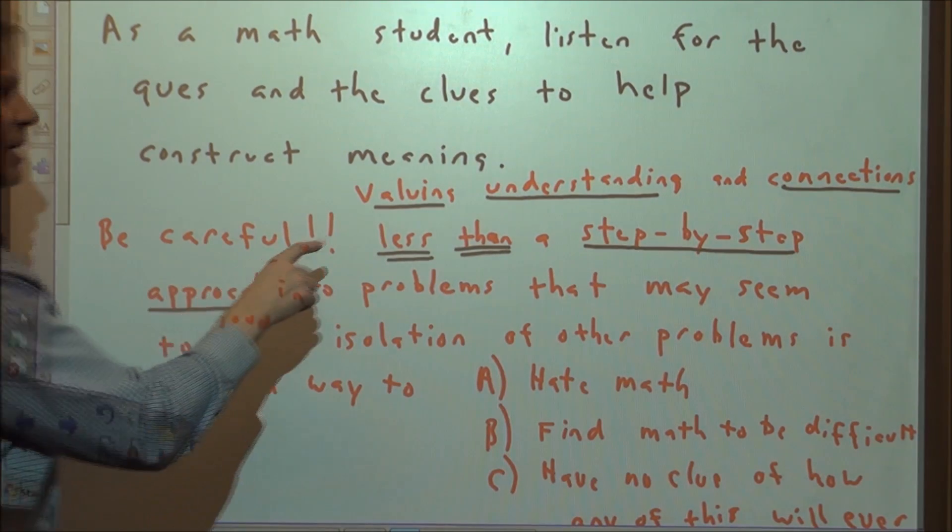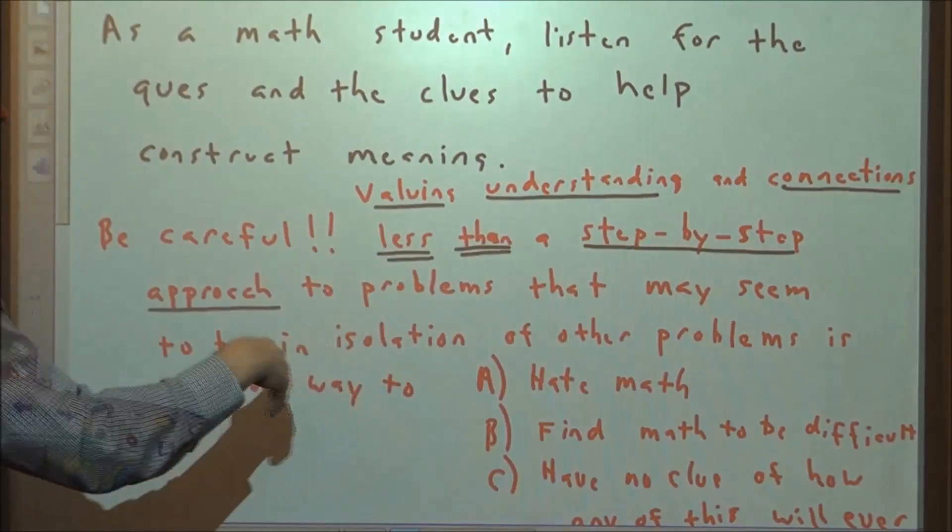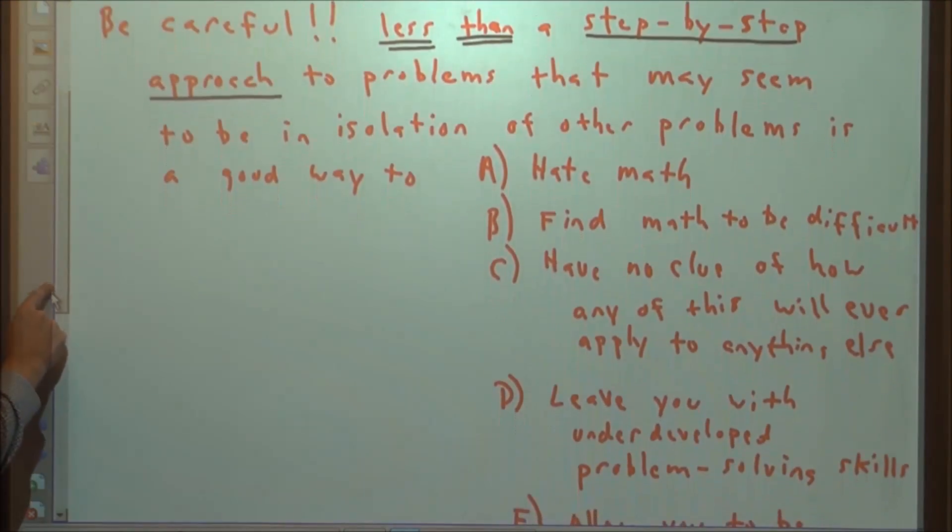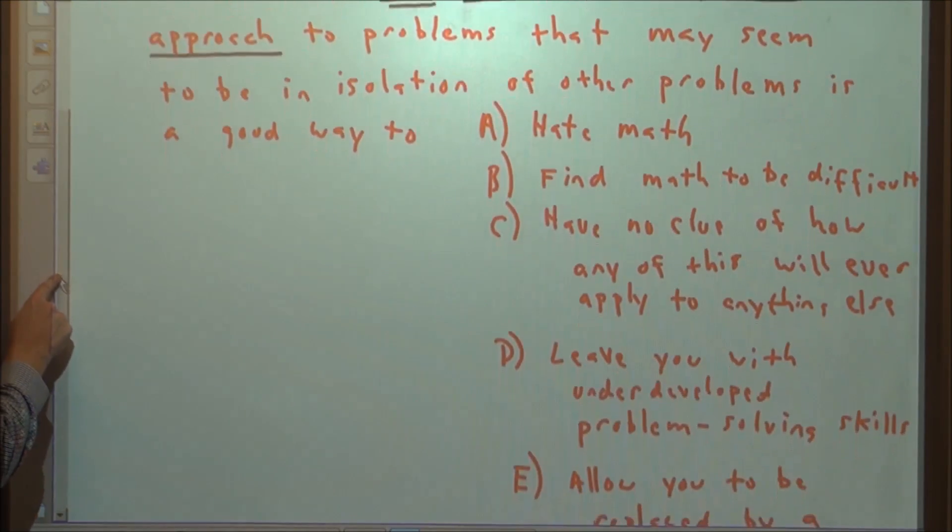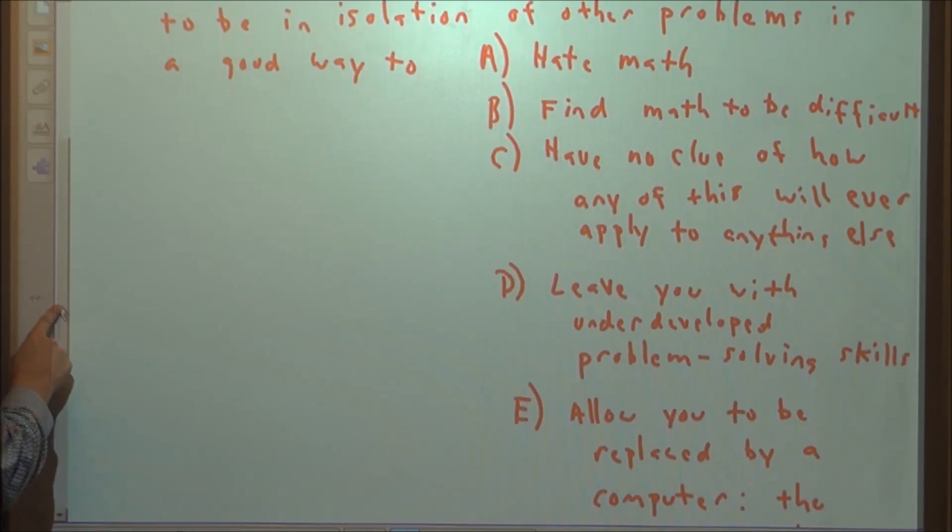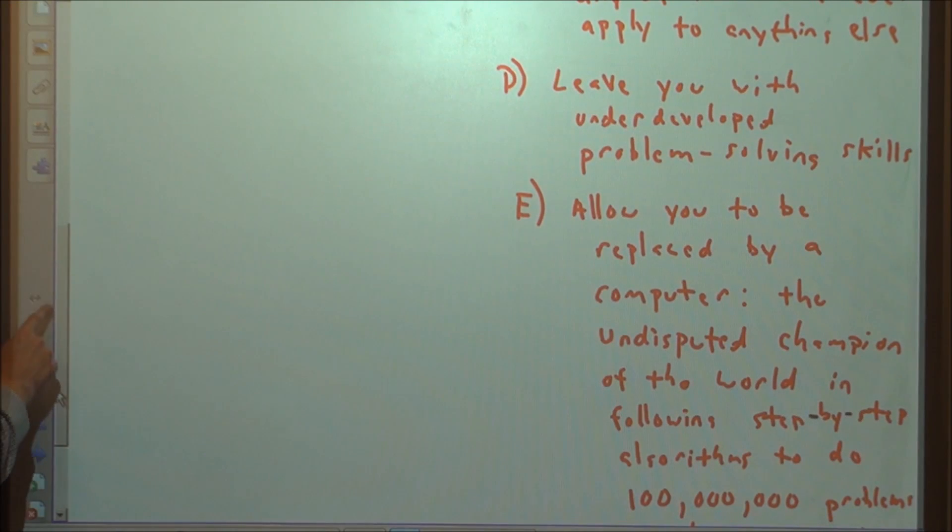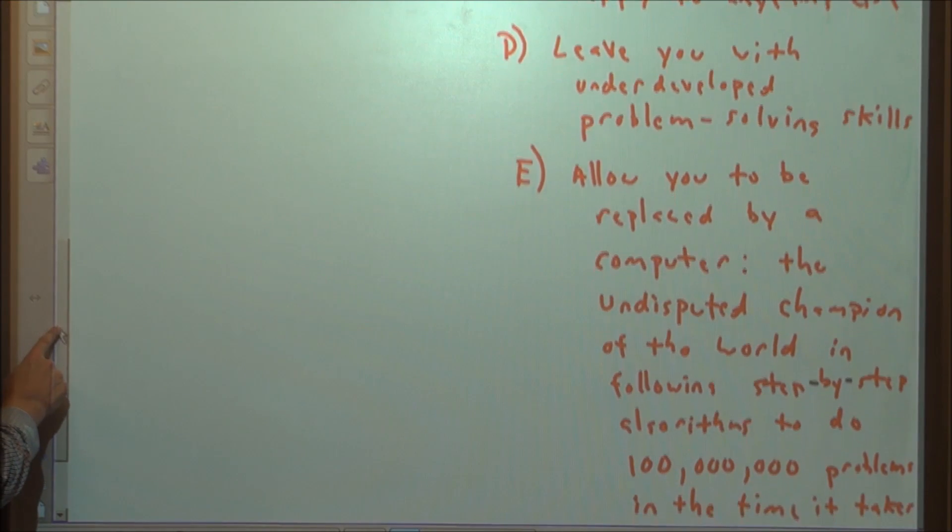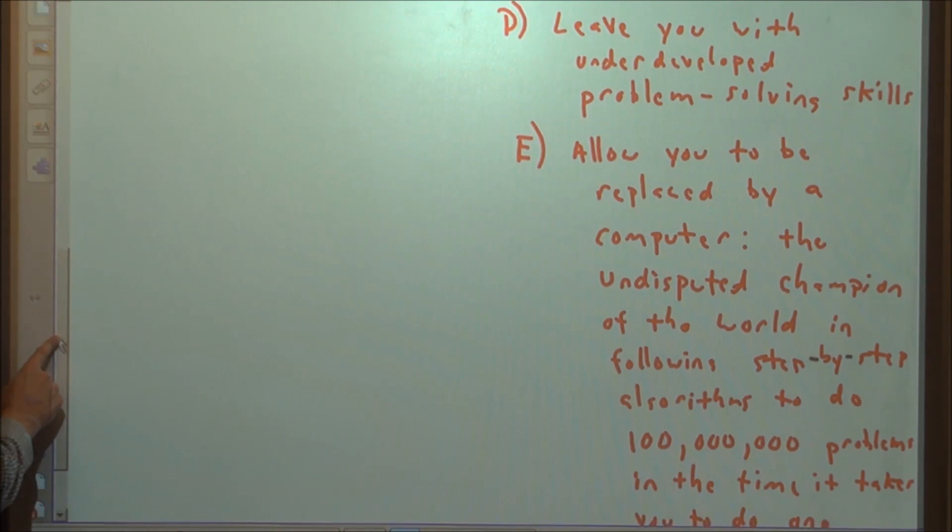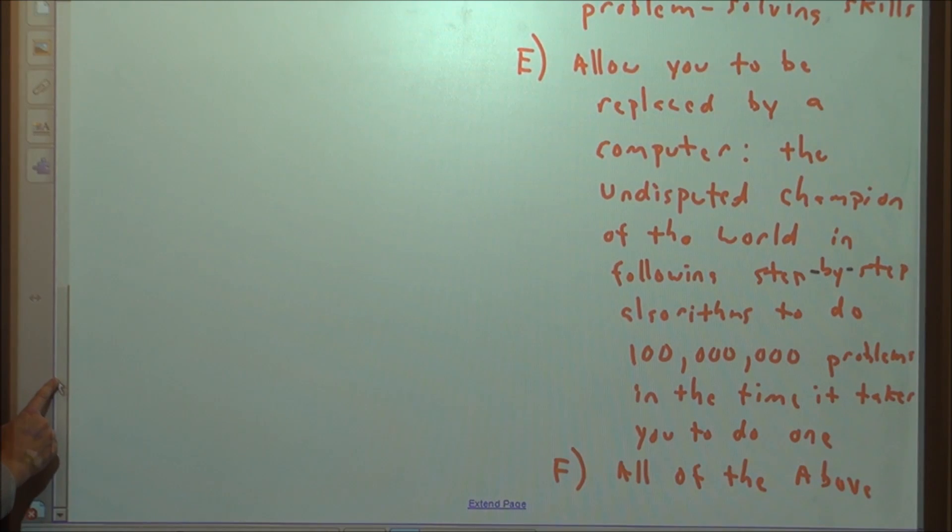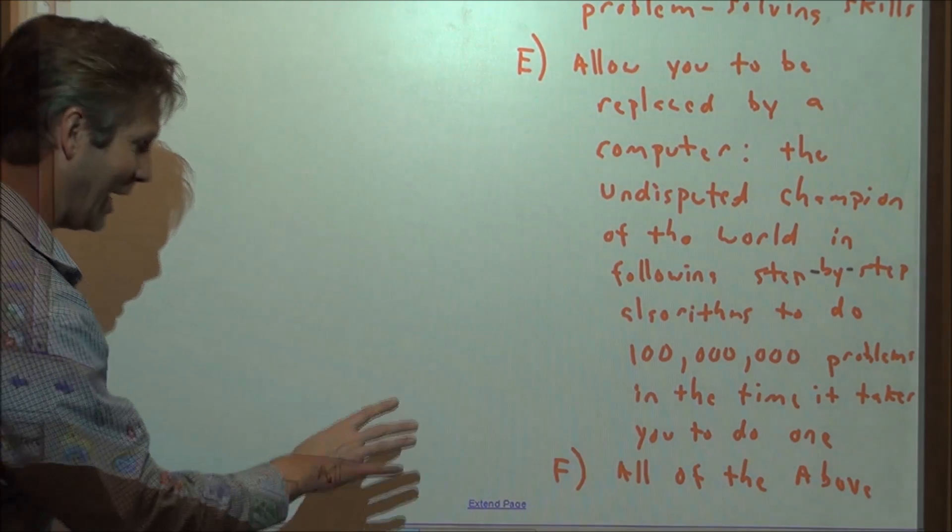And be careful. Valuing understanding and connections less than a step-by-step approach to problems that seem to be in isolation of other problems is a good way to A. Hate math. B. Find math to be difficult. C. Have no clue of how any of this will ever apply to anything else. D. Leave you with underdeveloped problem solving skills. E. Allow you to be replaced by a computer, the undisputed heavyweight champion of the world in following step-by-step algorithms to do about a hundred million times more problems in the same time it takes you to do one, or F. All of the above.